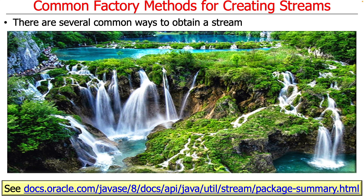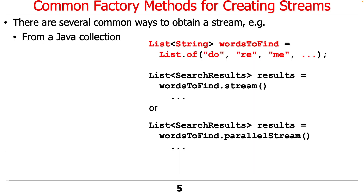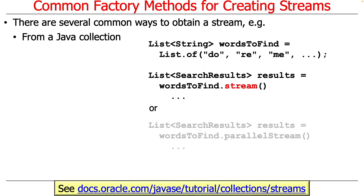There are several common ways to create a stream. The most common way — which we are doing here and you'll use in your programming assignment — is to use Java collection factory methods to turn a collection into a stream. One way to do it is by using List.of(). For example, we can make a list of words like "do, re, mi, fa, sol, la, ti, do", and once we have our list of strings defined, we can convert that into a stream by just calling .stream() on it.